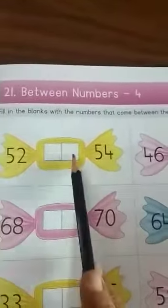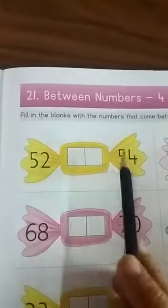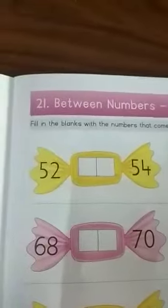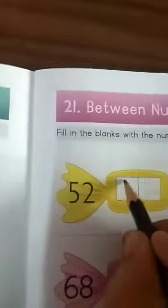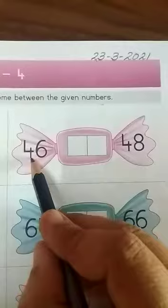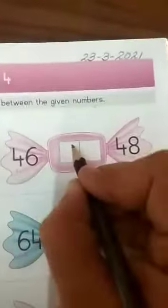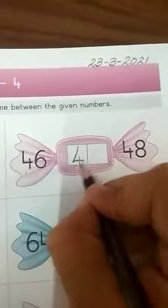See here 52 is given and 54 is given. So what will come between 52 and 54? 51, 52, 53, then comes 54. Now look here 46, dash 48. 46, 47, 48.